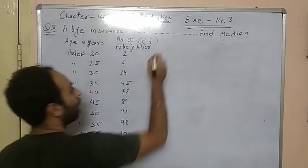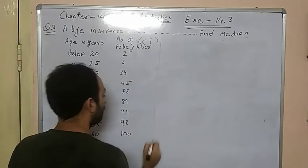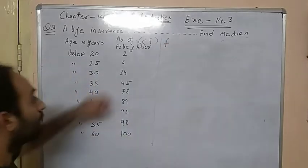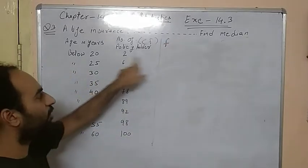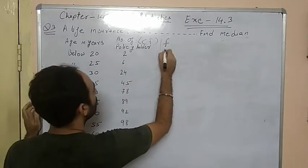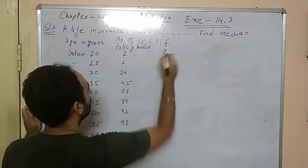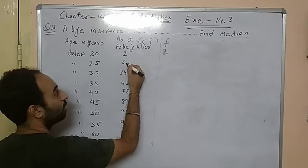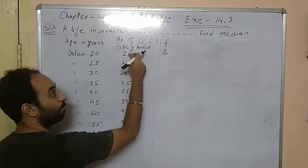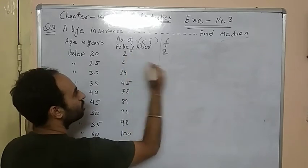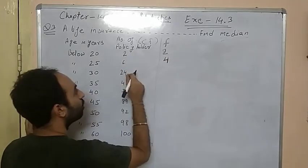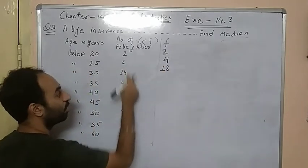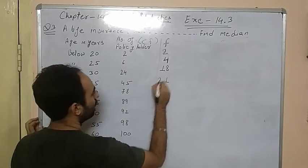So we have to find frequency. How do we find frequency? The first term remains the same — it is 2. After that, we subtract: 6 minus 2 gives 4. Then 24 minus 6 gives 18. Then 45 minus 24 gives 21.